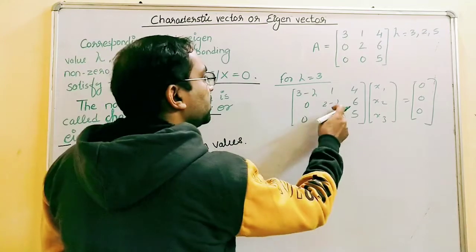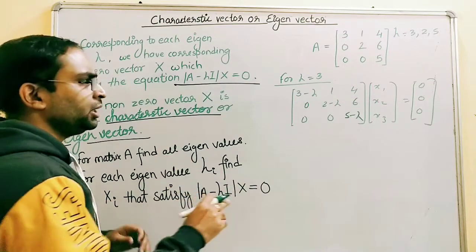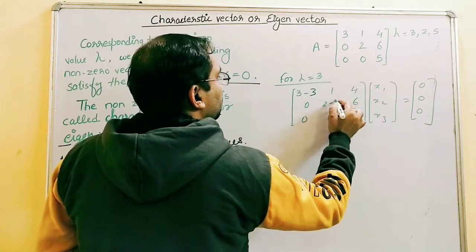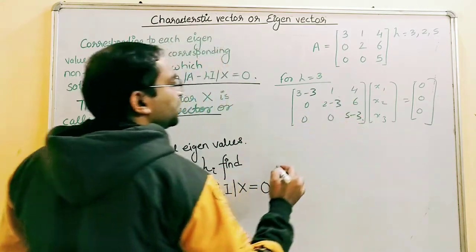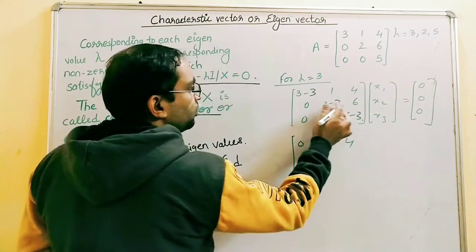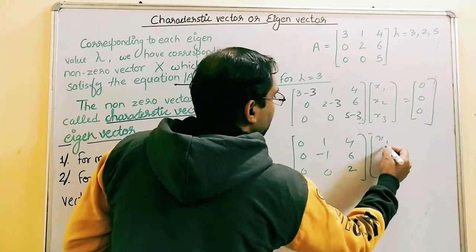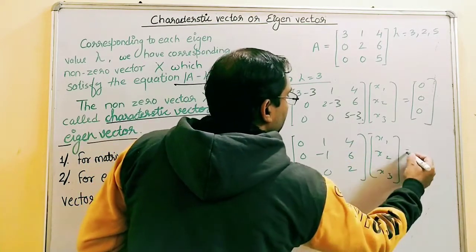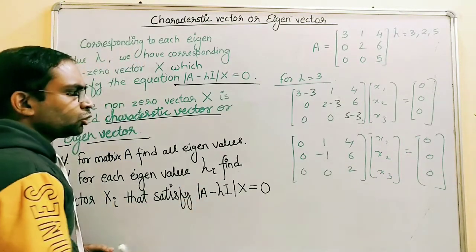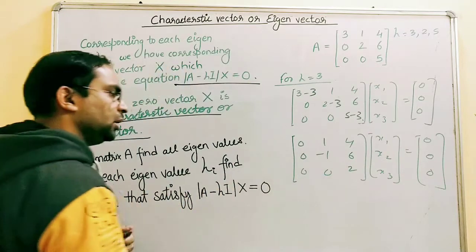This gives a trivial solution, so we form the first two equations: 0·X1 + X2 + 4X3 = 0, and 0·X1 - X2 + 6X3 = 0. We will perform the cross-product method to find the values of X1, X2, and X3.